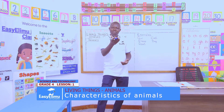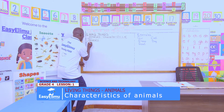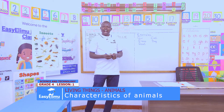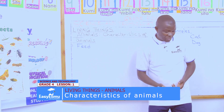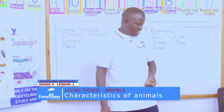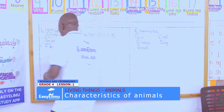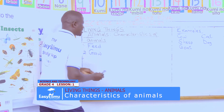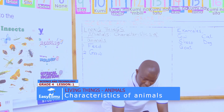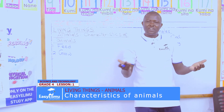Victor said animals are living things because they feed. Correct! Animals feed — they have to eat. A cow will eat, a donkey will eat, a sheep will have to feed so that it can grow. Wangari gave us another answer: animals grow. Correct! Animals have to grow — from a young one to a big one.